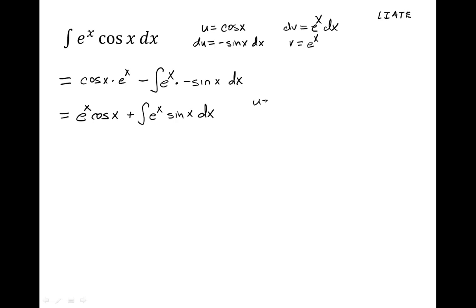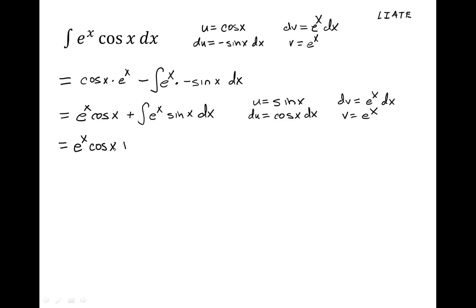Again, we have a trig and an exponential, which means u is going to be the trig function. So u equals sine x, and du equals cosine x dx. dv will equal e to the x dx, so v is equal to e to the x. So all of this is equal to e to the x cosine x plus — doing the integration by parts again — u, which is sine x, times v, which is e to the x, minus the integral of v, which is e to the x, times du, which is cosine x dx.